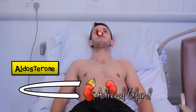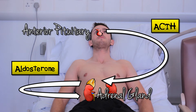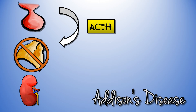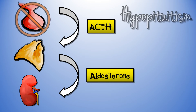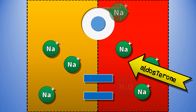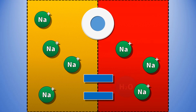Aldosterone is produced by the adrenal glands in response to ACTH, which is secreted by the anterior pituitary gland. So hypoaldosteronism can be due to primary adrenal insufficiency — Addison's disease — or due to hypopituitarism. Turn aldosterone off and the co-transporter gets lazy. Sodium accumulates in the urine and falls in the plasma.